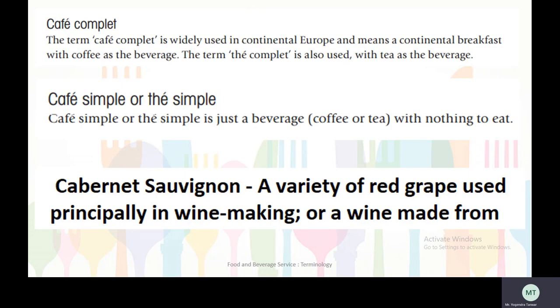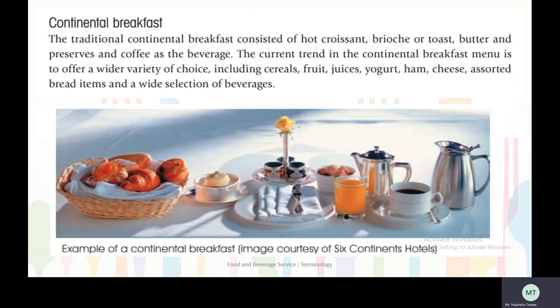Cabernet Sauvignon is a variety of red grape used principally in winemaking, or a wine made from the Cabernet Sauvignon grape. Continental breakfast — the traditional continental breakfast consisted of hot croissant, brioche or toast, butter and preserves, and coffee as the beverage.